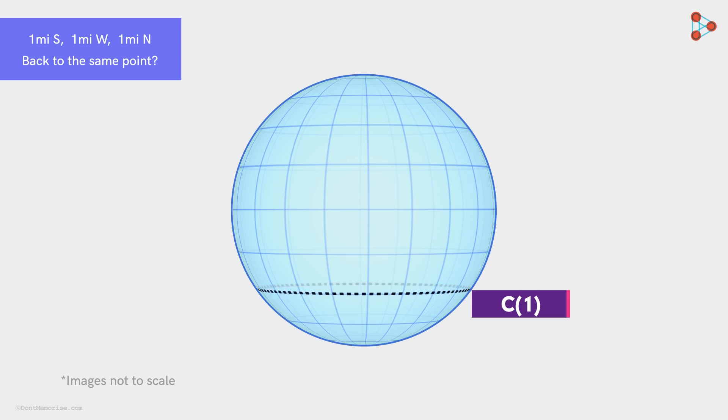Now, can you try finding more points on the earth that satisfy the condition mentioned in the riddle? Let's take a point one mile north of this circle and traverse the mentioned path. As we travel one mile south, we reach the circle C1.